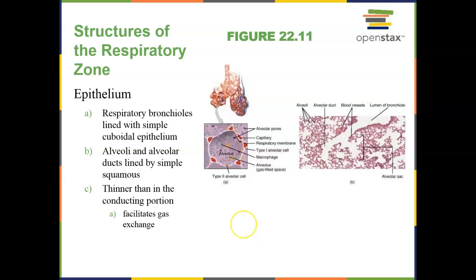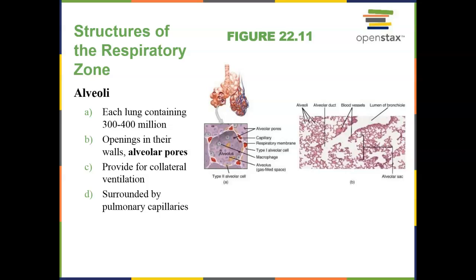The epithelium of the respiratory bronchioles is simple cuboidal epithelium. As we move into the alveoli, it gets thinner, so the majority is simple squamous epithelium. But there are also some simple cuboidal cells and some macrophages associated with the alveoli. Each lung contains about 300 to 400 million alveoli.